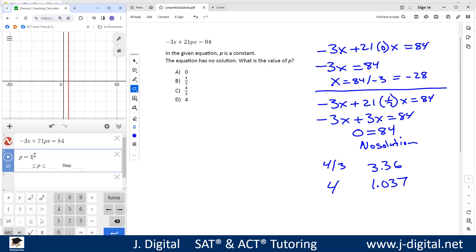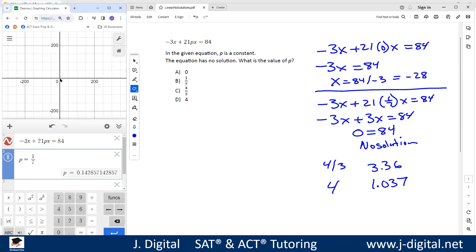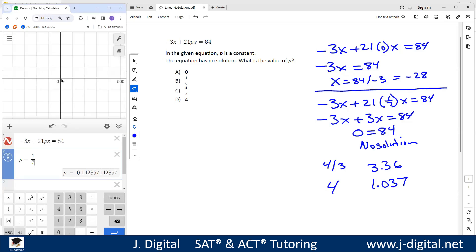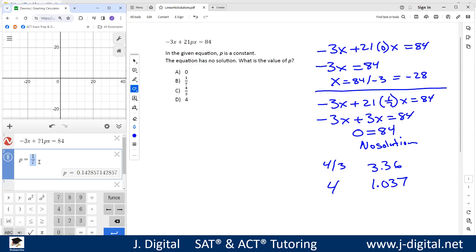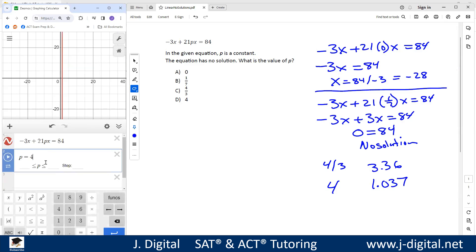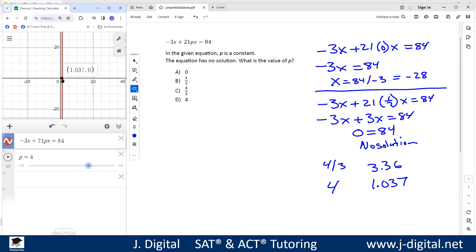Then we plug in our 1/7. Let me notice here, we don't see any vertical line, so it doesn't have any solution. If we try 4/3, we have a solution here at 3.36. We set p to 4 and we got a value at 1.037. So 1/7 is the one that doesn't give us a solution.